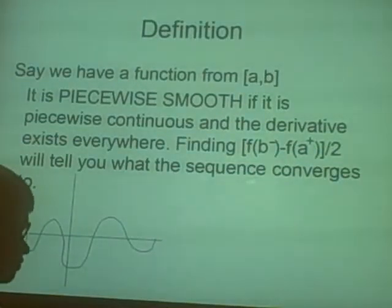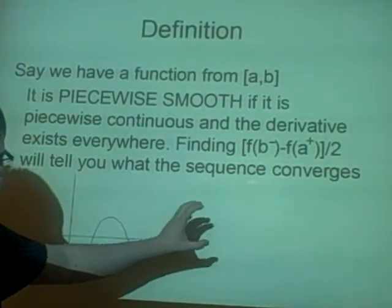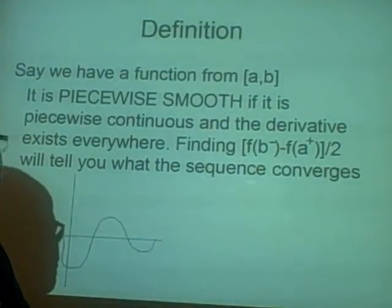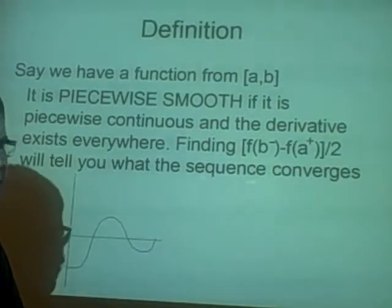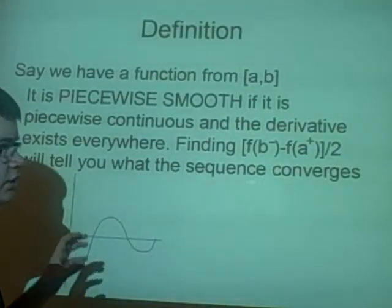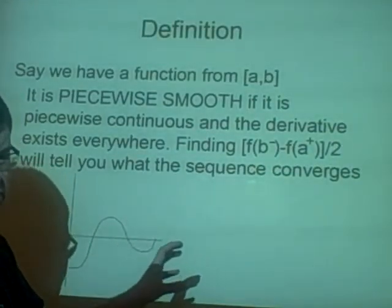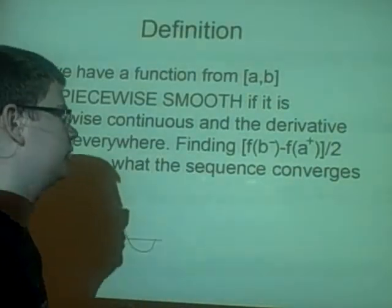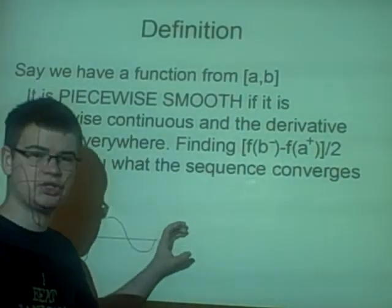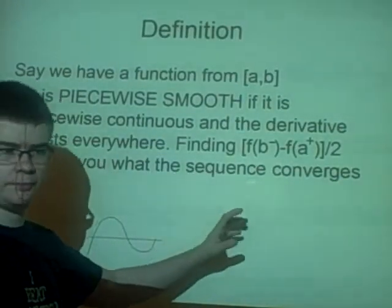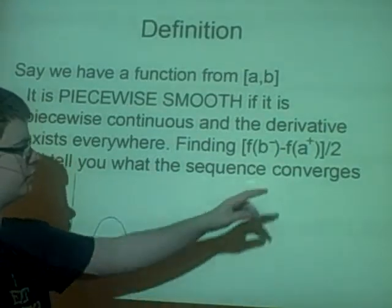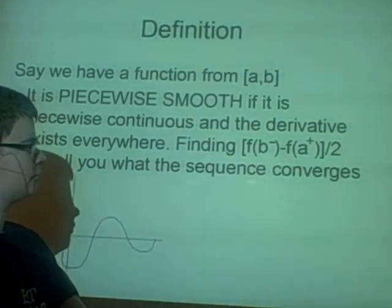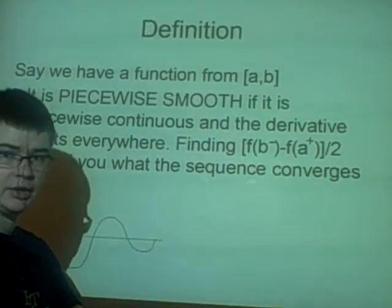An example he used was, if you have f of x, and it's zero between minus pi is less than t is less than zero, and t between zero is less than t is less than pi. If we have b, which is our bigger one, and we're going to that from the negative, we're getting to pi. And if we're getting f of a from the positive, that's going that way, so it gets us to zero.